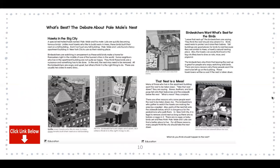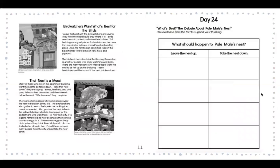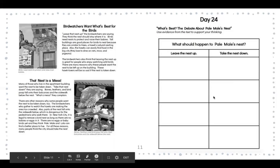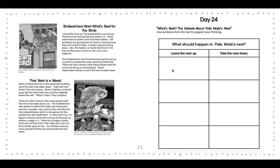Here is your article. The link is below in my YouTube video or in your Daily Dojo message, or you can pause my screen. I'll read the article and then do an example of each one for you. Bird watchers want what's best for the birds — "Leave that nest up," the bird watchers are saying. They think the nest should stay where it is. Birds need nests to protect and raise their babies. Tall buildings are good places for birds to nest because they are similar to trees, a hawk's natural nesting place. Also, the hawks can easily find food in the big city — they love to dine on rats, mice, and pigeons. The bird watchers also think that leaving the nest up is great for people who enjoy watching wild birds. There are many reasons why these people want the nest to be left up on the building, and these hawk lovers will be so sad if the nest is taken down.